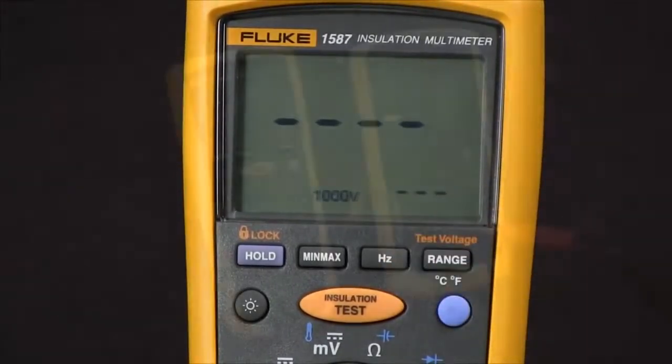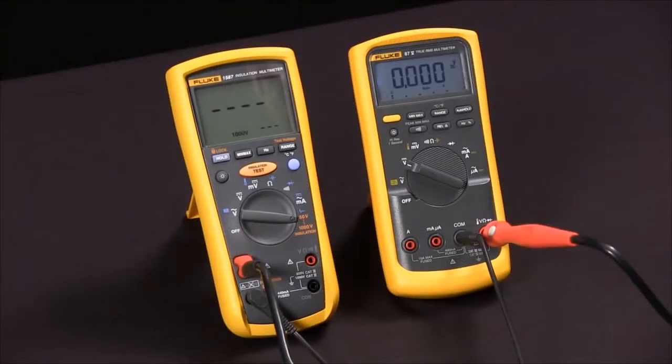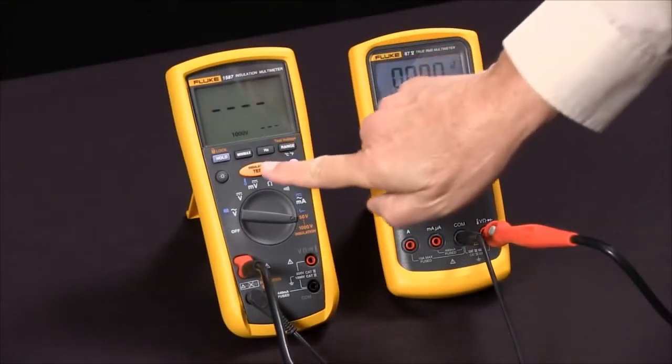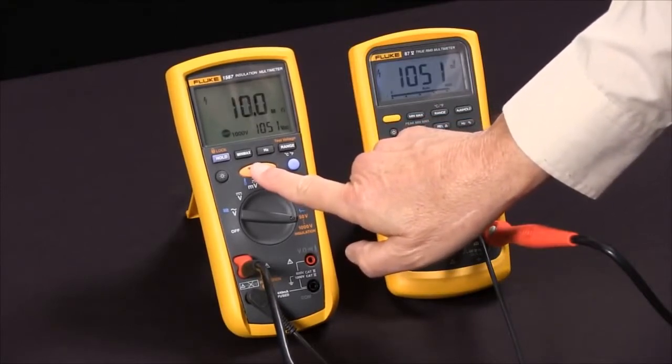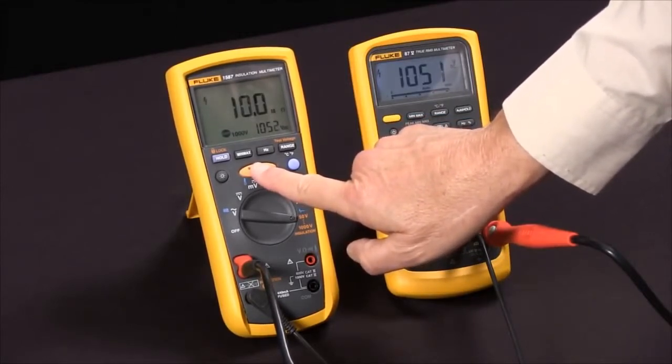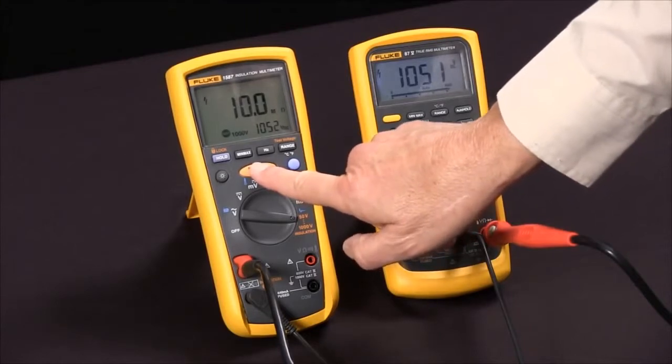I'm going to use 1,000 volts, and now we're ready to do our test. I'll press the test button, and you'll see it apply, in this case 1,052 volts, and read 10.0 megaohms.